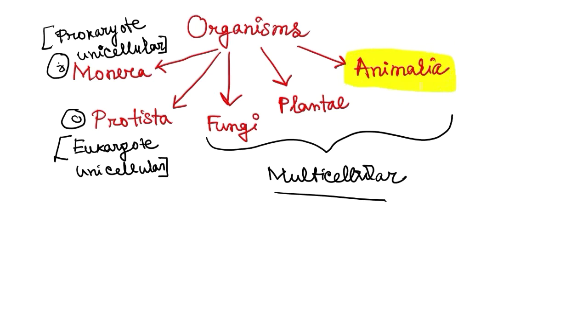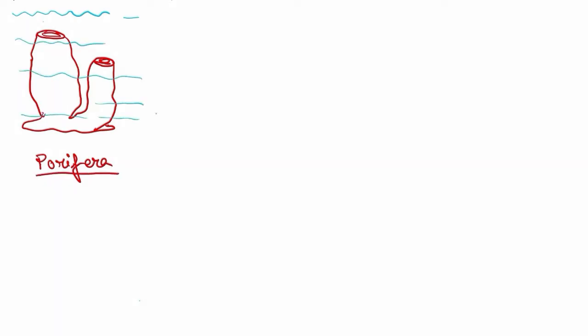Multicellular means their body is having more than one cell. In this video, we are going to talk about the kingdom Animalia. In the kingdom Animalia, we can see variety of organisms. The first and the basic type of organism in the Animalia kingdom is the Porifera. These organisms were formed under the water or under the sea and these are the simplest form of animal. They are sessile animals, that means they cannot move. Porifera is the first phylum of the Animal Kingdom.